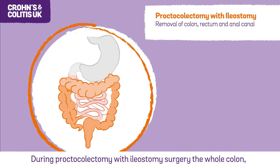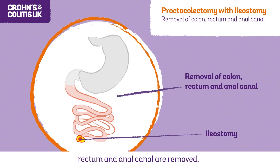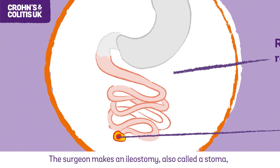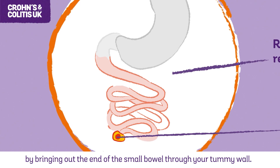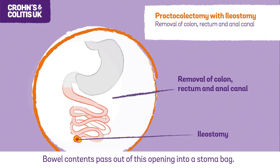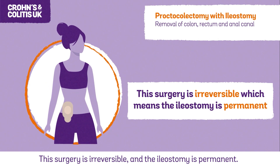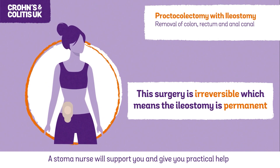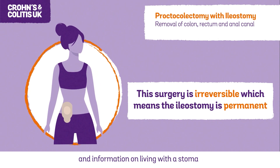During proctectomy with ileostomy surgery, the whole colon, rectum and anal canal are removed. The surgeon makes an ileostomy — also called a stoma — by bringing out the end of the small bowel through your tummy wall. Bowel contents pass out of this opening into a stoma bag. This surgery is irreversible and the ileostomy is permanent. A stoma nurse will support you and give you practical help and information on living with a stoma.